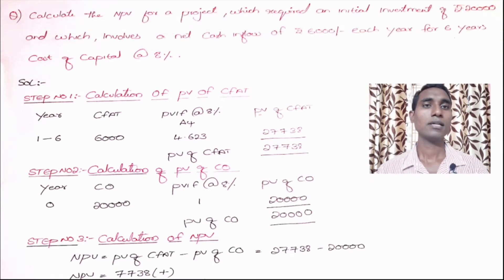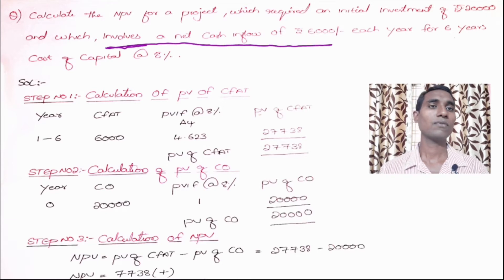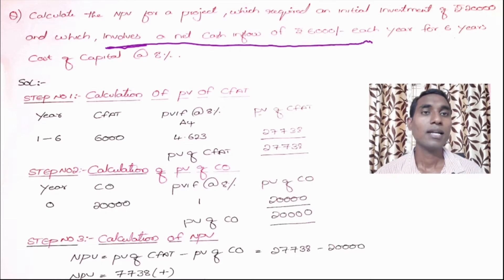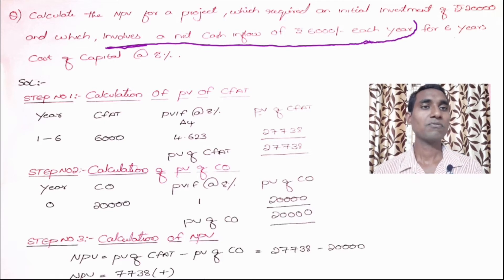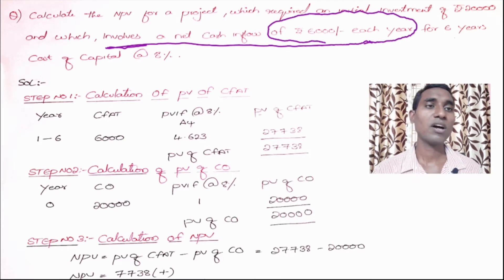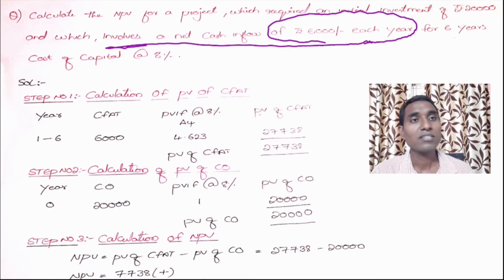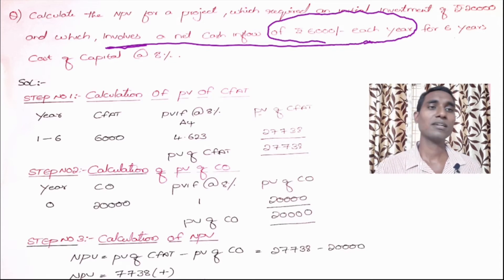The project involves a net cash inflows of 6,000 each year. Whenever in the question you find that the project results in constant cash inflows, like in the payback period, if the project pays you the same amount at the end of each year till the end of the project, then you can use this method.